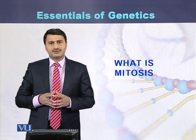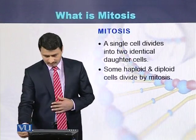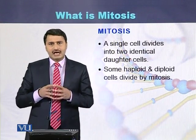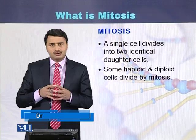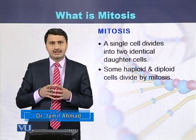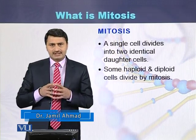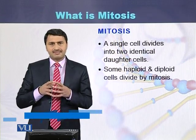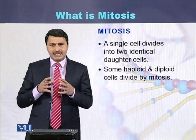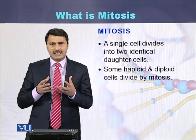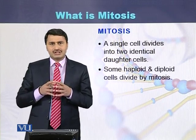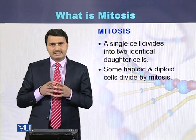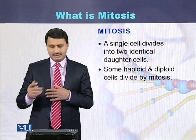What is mitosis? Mitosis is a process in which a cell divides into two daughter cells. Both the daughter cells which are produced from the mother cell, or from the parent cell, are identical to the mother cell. This process is seen in some haploid cells as well as in some diploid cells.